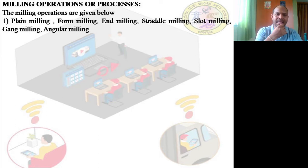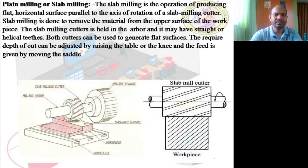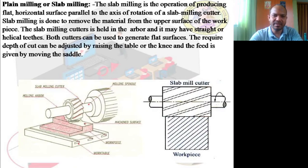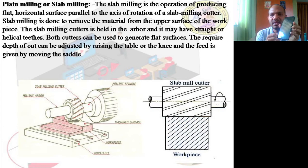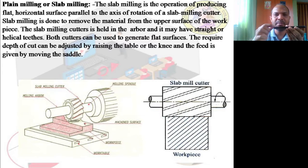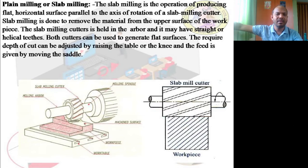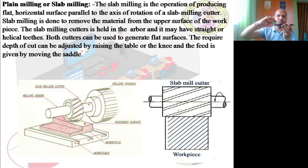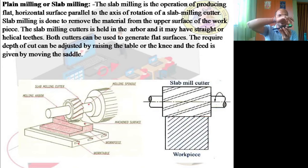Plane milling, also called slab milling — if you have a material and you want to reduce its thickness, say from 5 mm to 3 mm, you go for plane milling or slab milling. The multiple cutting tool rotates and keeps moving so that it removes material from one plane, then comes back and moves again, reducing the thickness of the plate.